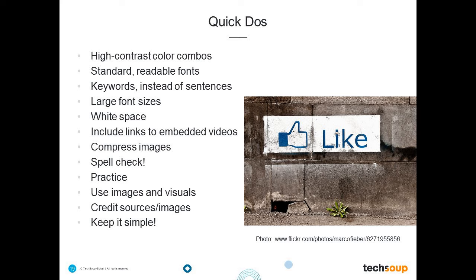Use keywords instead of full sentences — you don't need big paragraphs of text in a presentation. Use larger font sizes: 20 and up is recommended, some people recommend 36 and up. Larger fonts also help you keep in mind how much text to put on a screen, and maintain balance of white space. Include links to embedded videos since videos may not play for everyone depending on their PowerPoint version. Compress images — a lot of people don't know you can compress images within the file to make it easier to email, and you can do it a couple of different ways.